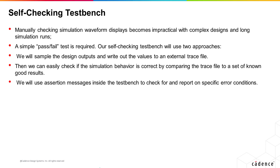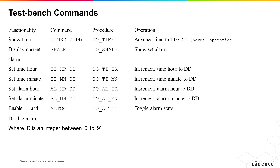We will also use assertion messages inside the test bench to check for and report on specific error conditions. The test bench should also be robust enough to reject any mistyped commands like SHLAM and handle any invalid operations like incrementing hour TI_HR 99. Our test bench should read the command from the external file, read the correct number of data values depending on the command, call the appropriate procedure with correct parameters, check for successful completion, and execute all commands in the file.